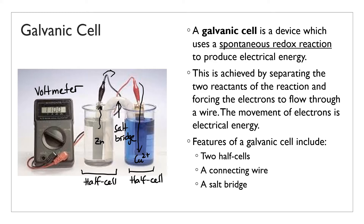So this is a galvanic cell. Generally speaking, a stack of multiple galvanic cells is called a battery, though there are single-cell batteries as well. An AA battery technically has only one galvanic cell in it, but this is the primitive, fundamental structure of what a battery is.